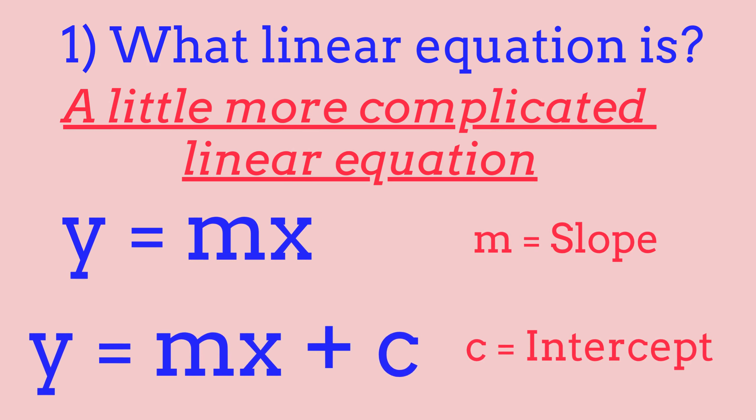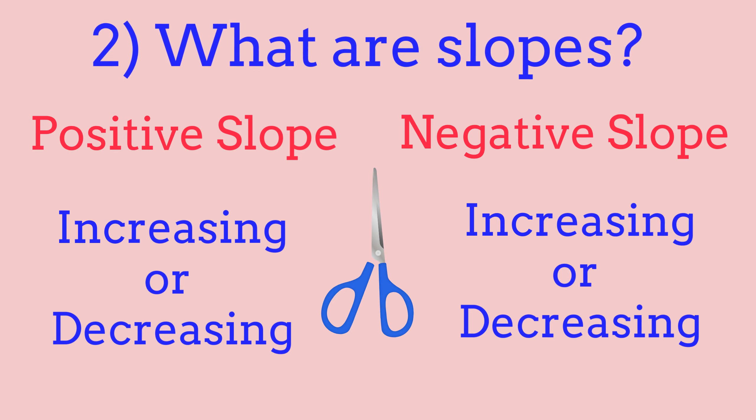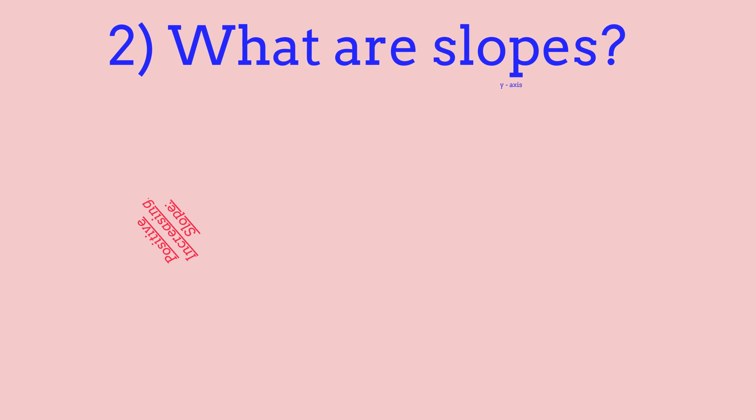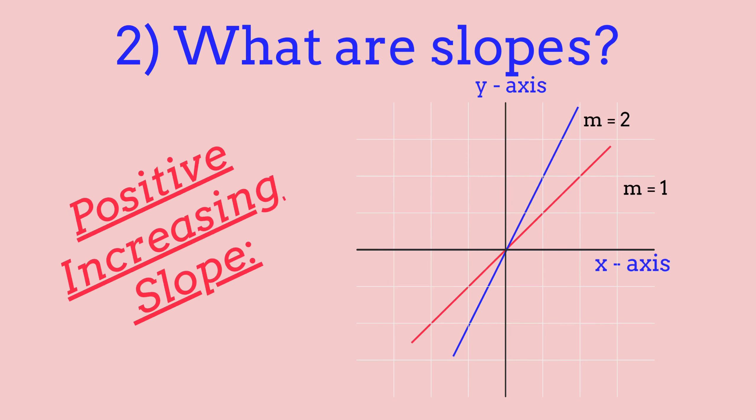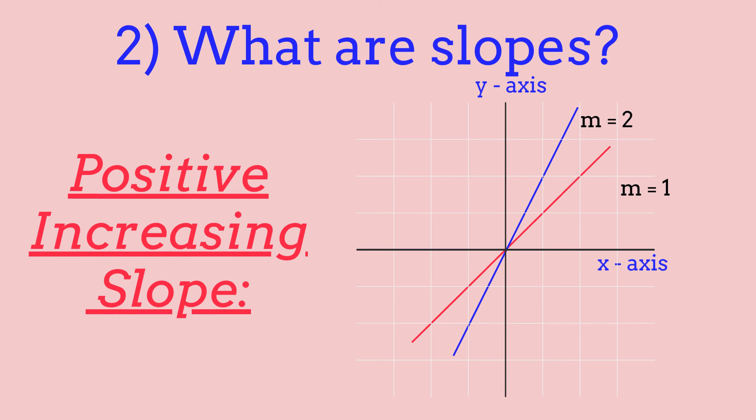Now we're going to be talking about what a slope is. There are four different types of slopes: positive, increasing, decreasing, and negative. A slope increases when the variable m gets bigger. Inside the equation y equals mx, when m gets bigger, the slope also gets bigger and moves towards the y-axis. For example, y equals x is a straight line through (0, 0), but y equals 2x starts going up and closer to the y-axis while still passing through (0, 0) — the line just shifts upwards.